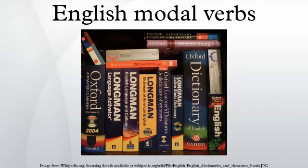Past forms: the preterite forms given above do not always simply modify the meaning of the modal to give it past time reference. The only one regularly used as an ordinary past tense is 'could', when referring to ability — 'I could swim' may serve as a past form of 'I can swim'. All the preterites are used as past equivalents in indirect speech and similar clauses requiring the rules of sequence of tenses. For example, in 1960 it might have been said that people thought we would all be driving hover cars by the year 2000.